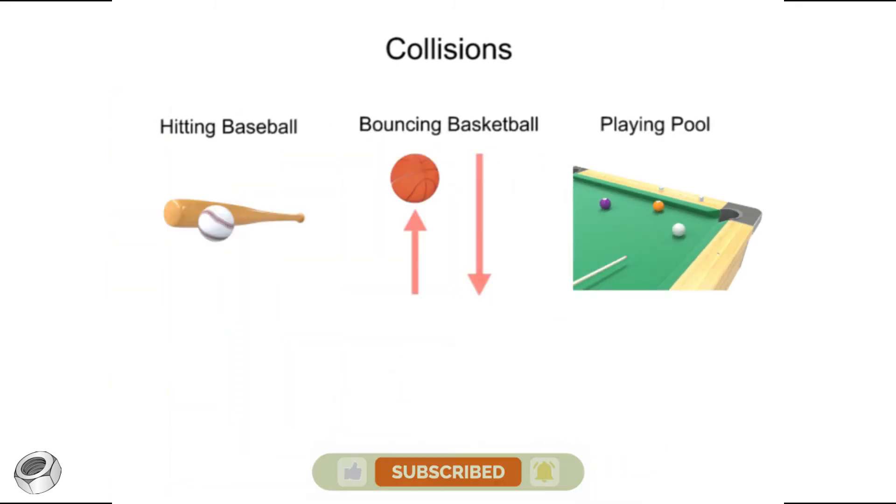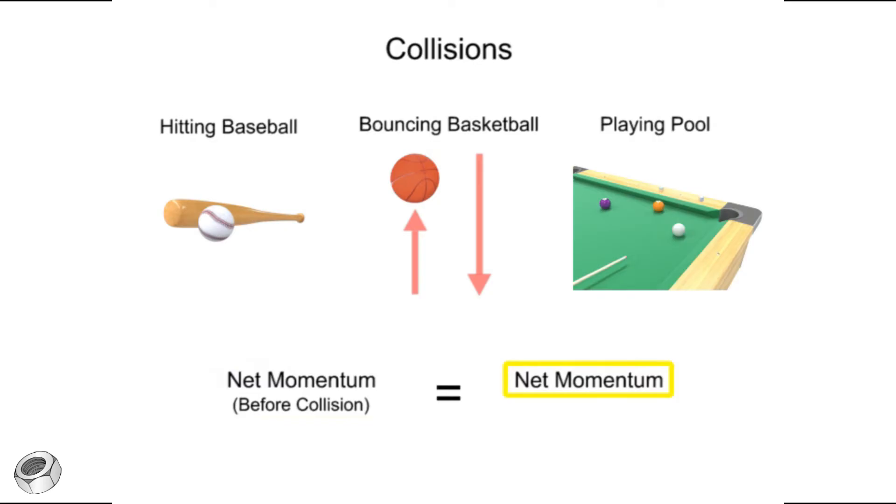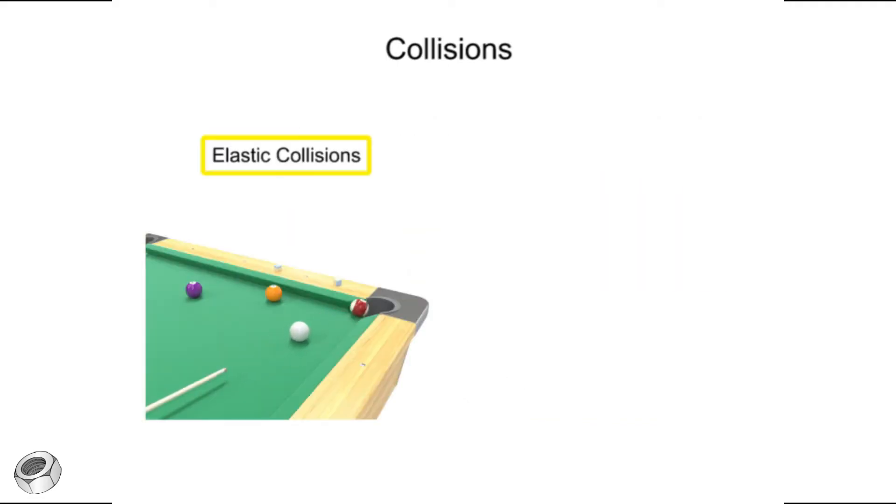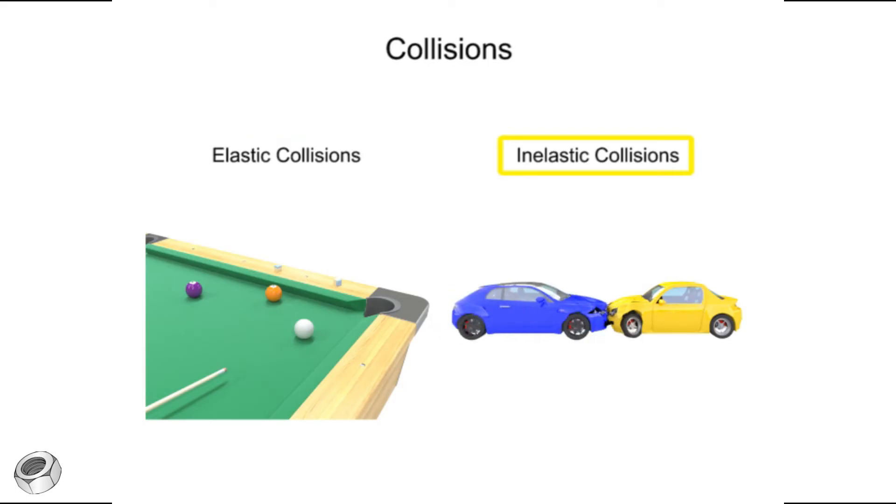When objects collide in the absence of external forces, they form a system in which the net momentum of both objects before the collision equals the net momentum of both objects after the collision. There are two types of collisions: elastic collisions and inelastic collisions.